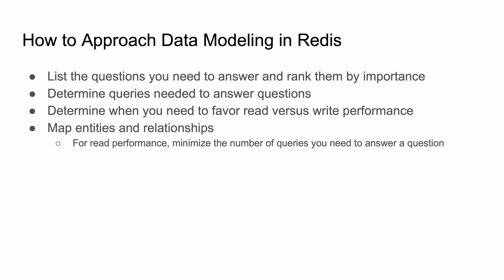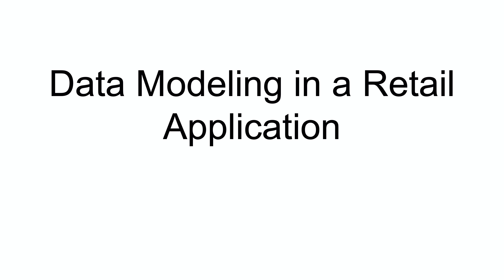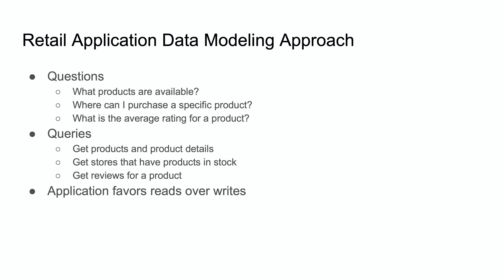Redis can do millions of queries per second, so you don't really have to rely too much on only having one query. But from an application perspective it's nicer to have simplified queries rather than making a bunch of round trips and doing looping in your application. So let's consider a retail application — think of any big box retail store that might have a digital experience where you can look at products, purchase them, and go pick them up in the store.